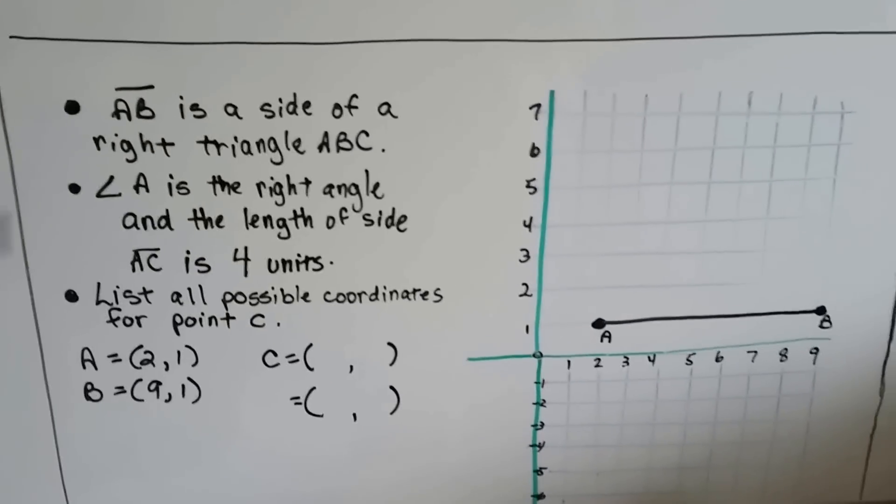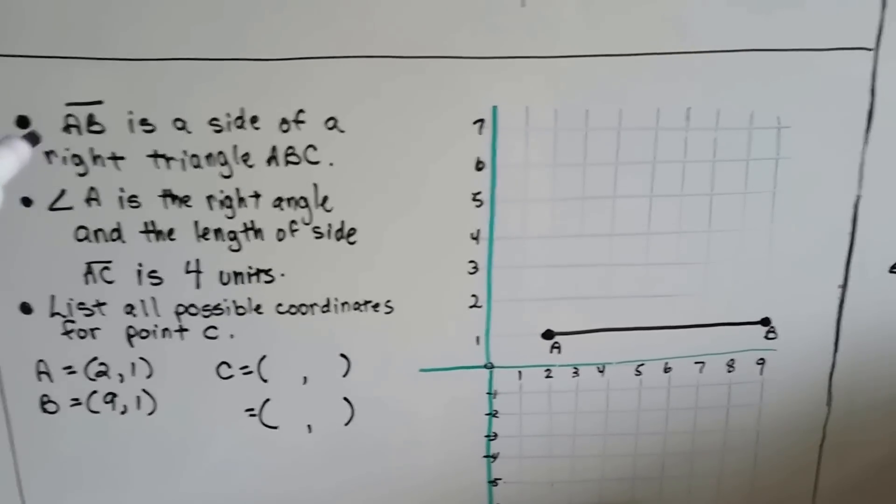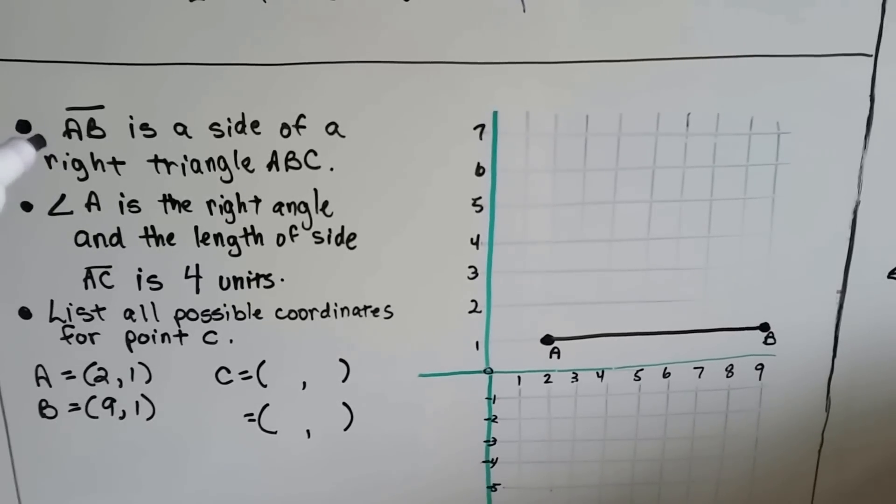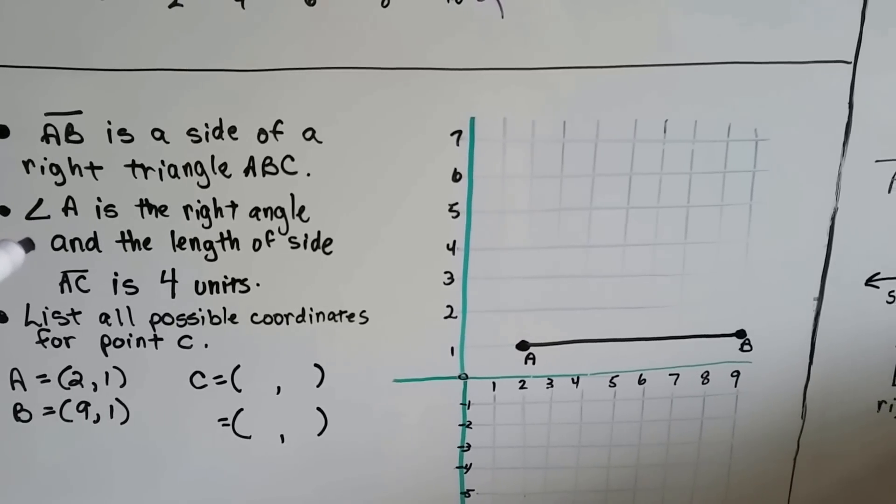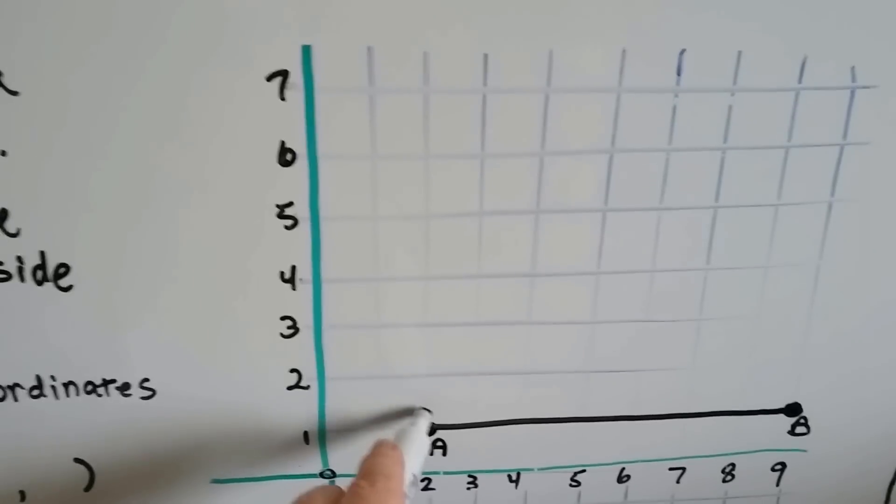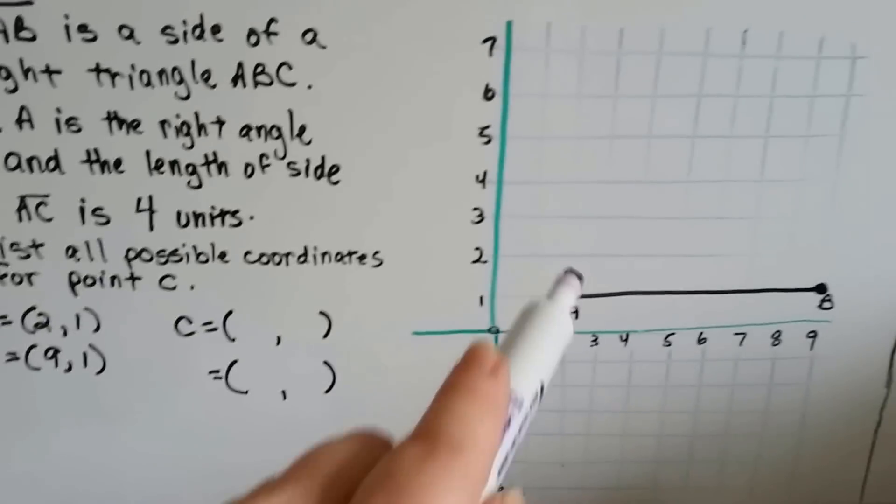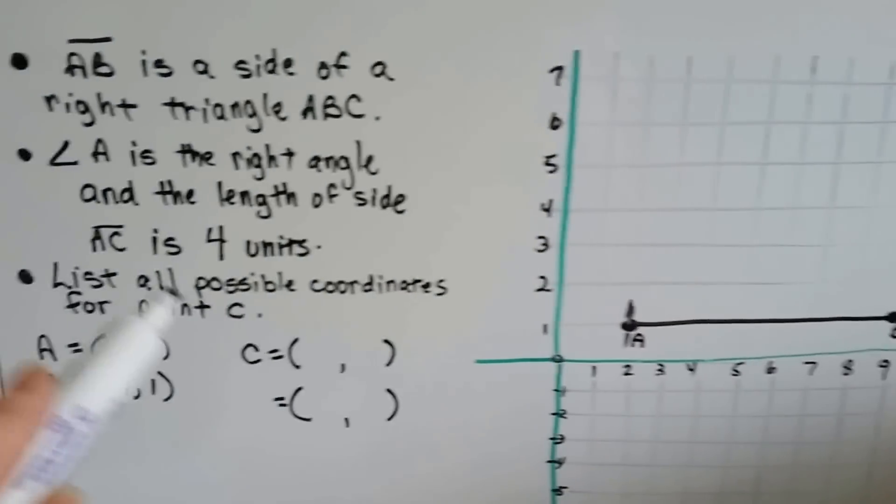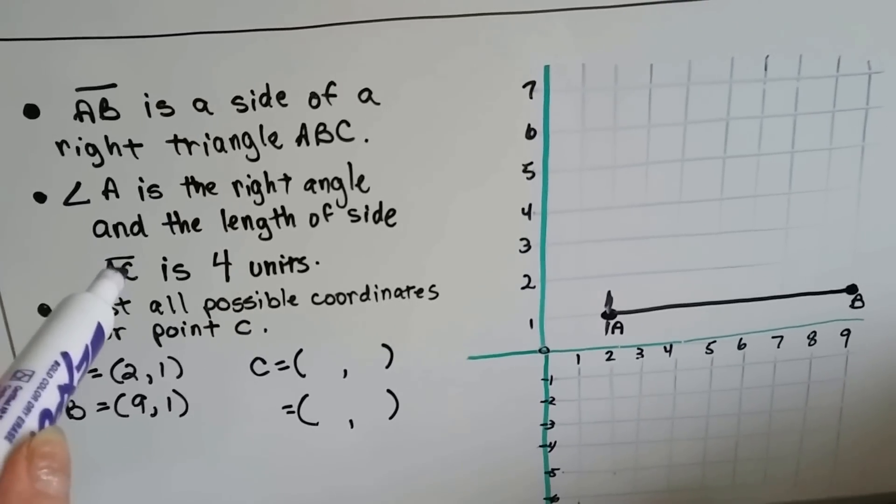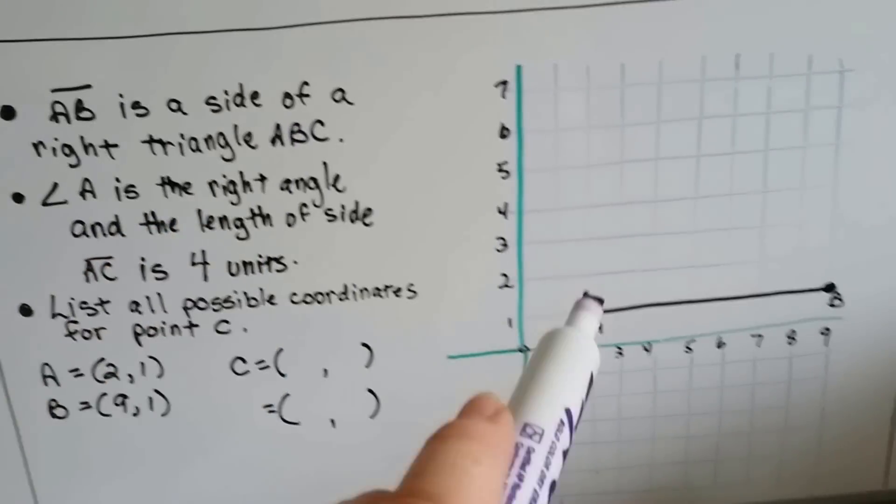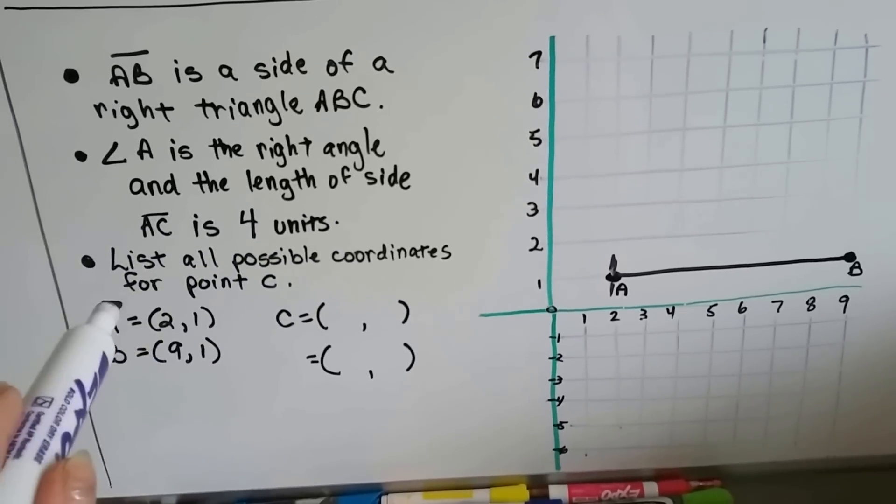This one's a little more difficult. It says AB, this line right here, is the side of a right triangle. So, there's a 90-degree angle somewhere. Angle A is the right angle. So, this is going to be the right angle. But is it going up or going down? Angle A is the right angle. And the length of the side AC, because it's triangle ABC, we're missing C, is 4 units. So, list all the possible coordinates for point C.